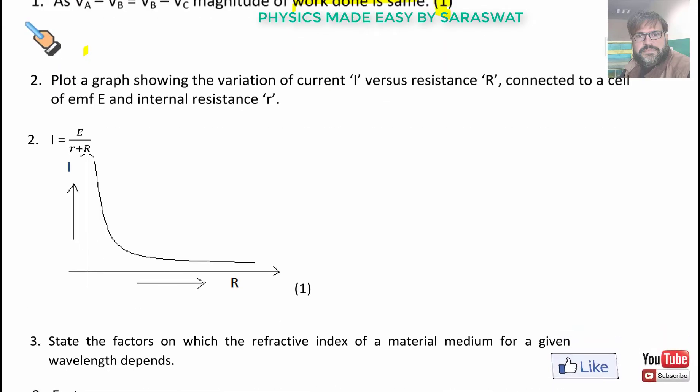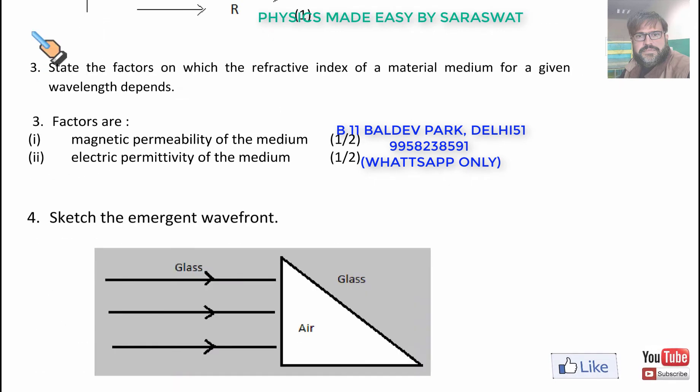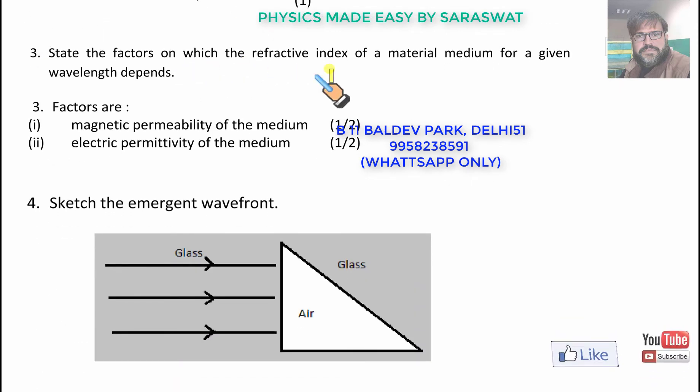Next, plot a graph showing the variation of current I versus capital R connected to a cell of EMF E and internal resistance small r. This is the graph. The equation is I is equal to E upon small r internal resistance plus capital R external resistance. State the factors on which the refractive index of a material medium for a given wavelength depends. The refractive index depends upon magnetic permeability μ of the medium and electric permittivity ε of the medium.